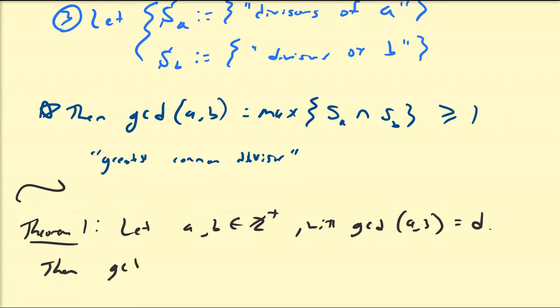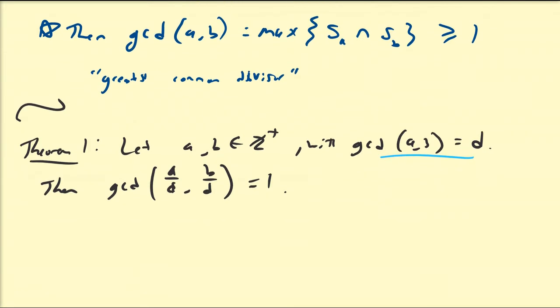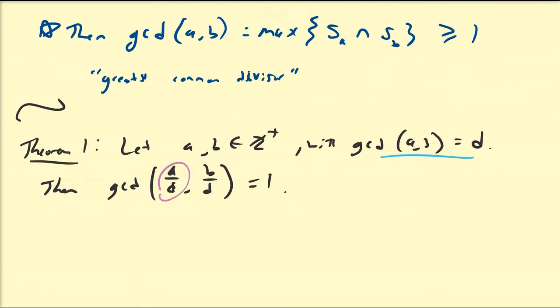Then the greatest common divisor of A divided by D and B divided by D is equal to 1. It is already stipulated that A over D and B over D are integers, because we're assuming D divides both A and B. Sometimes we refer to these numbers as being relatively prime if their greatest common divisor is equal to 1. If you want to take a moment to prove this on your own, give it a go, then look at this approach.